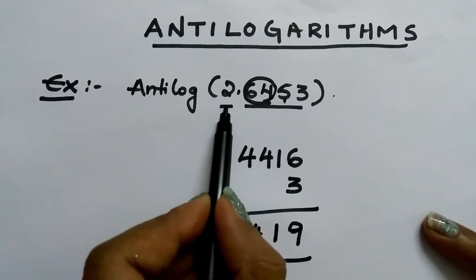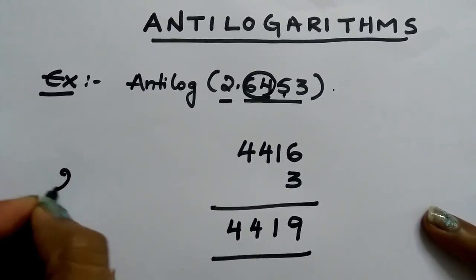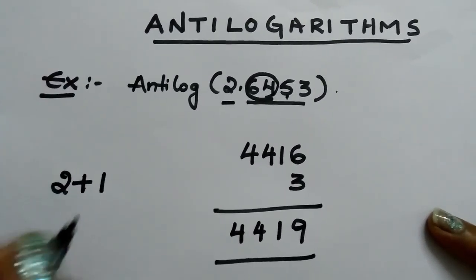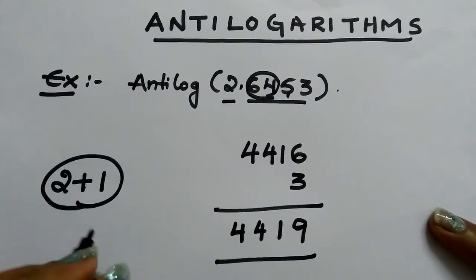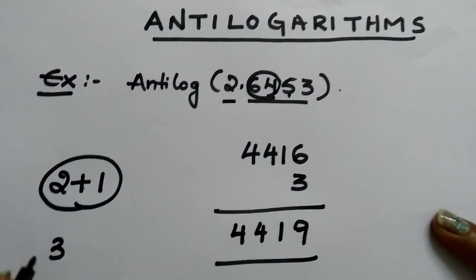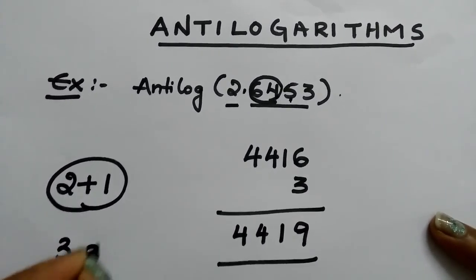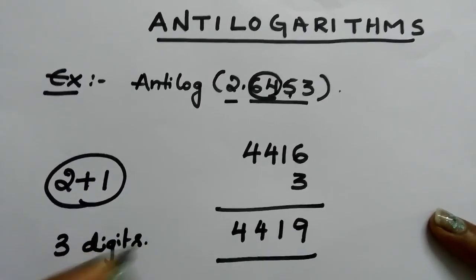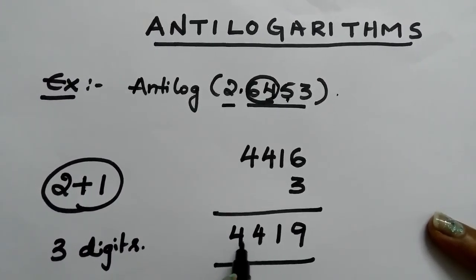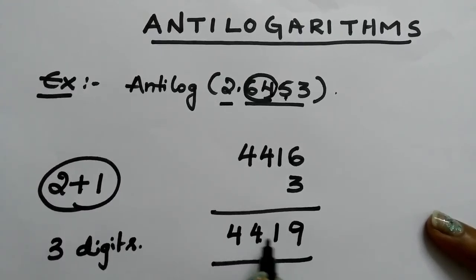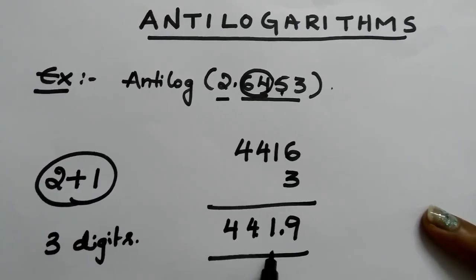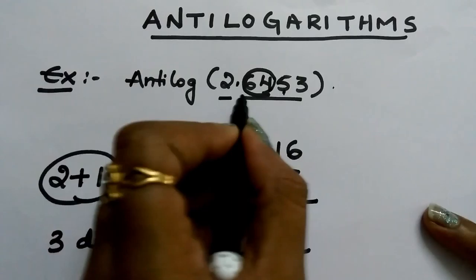Here the characteristic is 2. Whatever the value, add 1 to that, which is useful to place the decimal. Here we got 3 digits. So we have to put the decimal point after 3 digits: 1, 2, 3. This is the value of this number.